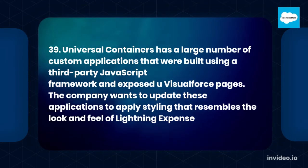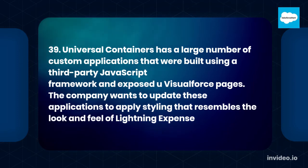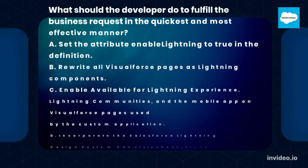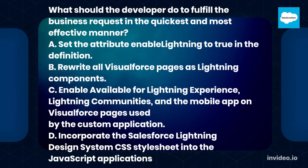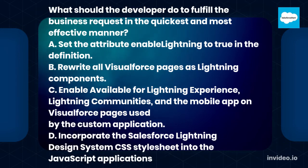Question 39. Universal Containers has a large number of custom applications that were built using a third-party JavaScript framework and exposed via VisualForce pages. The company wants to update these applications to apply styling that resembles the look and feel of Lightning Experience. What should the developer do to fulfill the business request in the quickest and most effective manner? A. Set the attribute EnableLightning to true in the definition. B. Rewrite all VisualForce pages as Lightning Components. C. Enable 'Available for Lightning Experience, Lightning Communities, and the mobile app' on VisualForce pages used by the custom application. D. Incorporate the Salesforce Lightning Design System CSS stylesheet into the JavaScript applications.